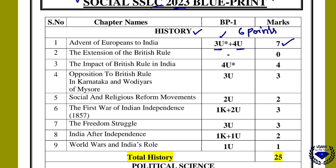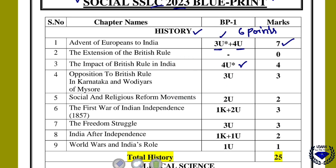Total seven marks come from the first chapter. In the second chapter, no question has come. The impact of British rule in India carries a four-mark understanding-based question — you should write eight points. The star indicates there is an option, so you will have an 'or' question and need to answer one. Next, from opposition to British rule in Karnataka and Warriors of Mysore, you will have a three-mark understanding-level question.